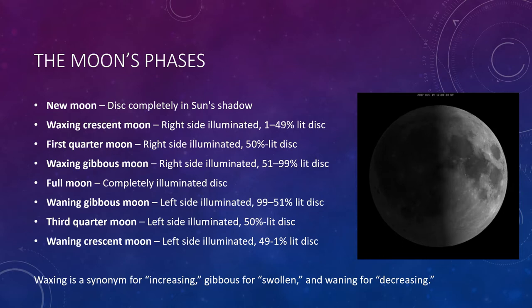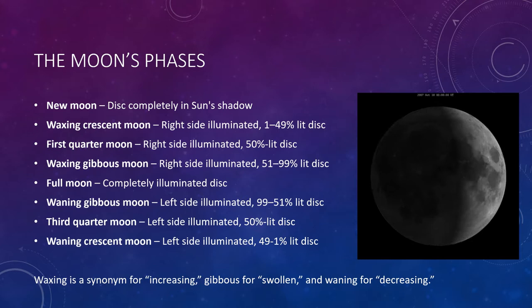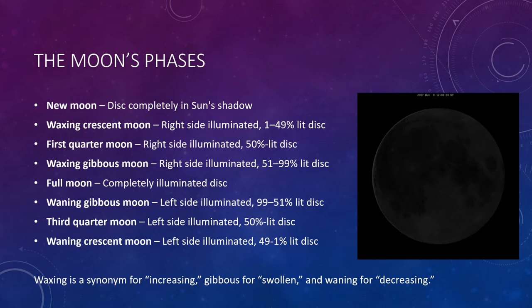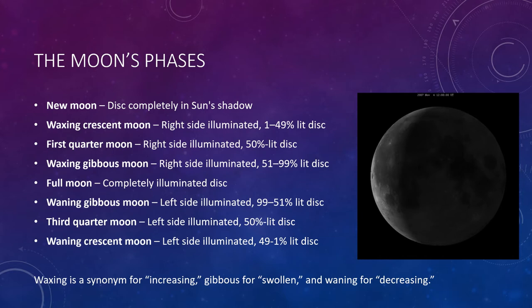Waxing is whenever it's filling up. Then we get to the full moon, whenever the disk is completely illuminated. From there, we just start losing some of the illumination. We have a waning gibbous moon when the left side is illuminated anywhere from 99% down to 51%. Then we get to our third quarter moon when the left side is illuminated halfway. And then waning crescent, when we have a crescent moon, that's anywhere between 1 and 49% lit, but decreasing. Waxing is a synonym for increasing and gibbous for swollen, whereas waning is a synonym for decreasing.